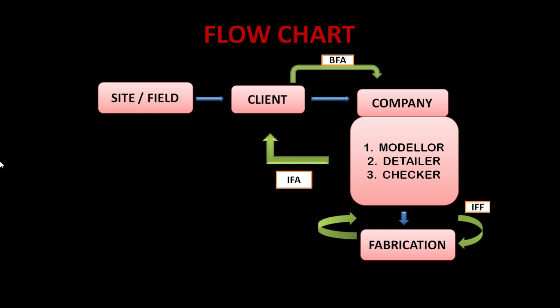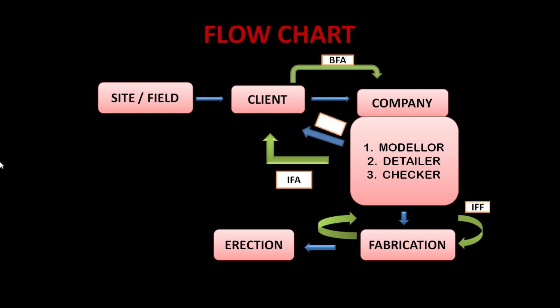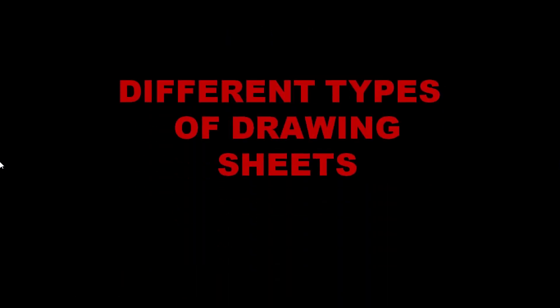The fabricator's work is to mold the members as per the drawings given by the detailer. After preparing the members in the fabrication shop, the fabricator sends the members to the site for erection — which is essentially construction. After erection, there is commissioning, which is inspection. During modeling or drawing creation, if you have any doubts about client standards, you can approach the client through RFI — Request For Information.